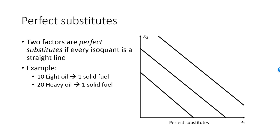If x1 is the amount of light oil used in the production process and x2 is the amount of heavy oil, then the production function is given by y equals x1 over 10 plus x2 over 20. If a production function is linear in both arguments, then the factors must be perfect substitutes.